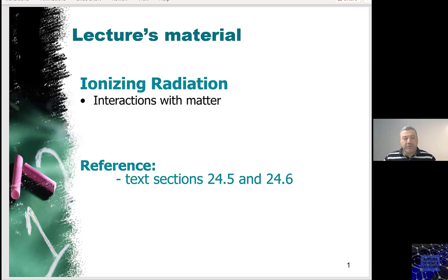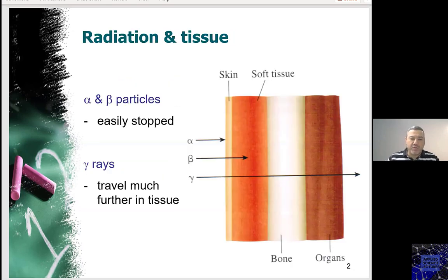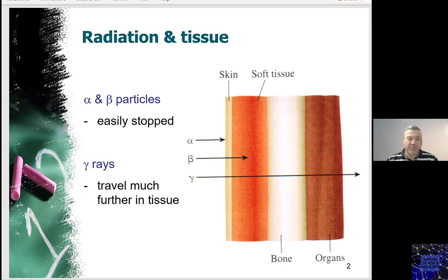Good morning. Today's lecture is about the interactions of radiation with matter. In previous lectures, we looked at particles that were radiating and decaying — the alpha, the beta, and the gamma — and we saw the differences between those three types of particles. Today we will look at how those particles interact with matter.